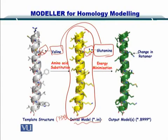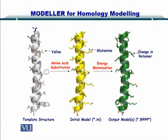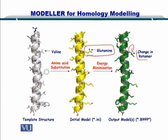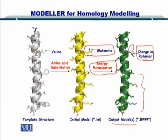Energy is minimized for the initial model by creating all the possible rotamer configurations for glutamine. You can see the rotamer, or side chain, has been rotated and therefore lesser energy is now present in the structure, making the structure more stable. This change in rotamer has helped to minimize the energy, and this is output as the output model. Modeler can output several of these output models and you can select the best one according to the score.